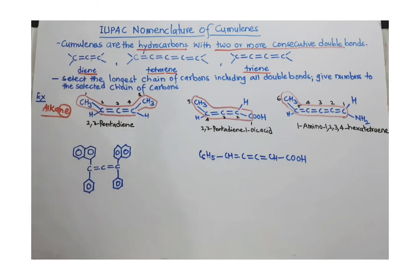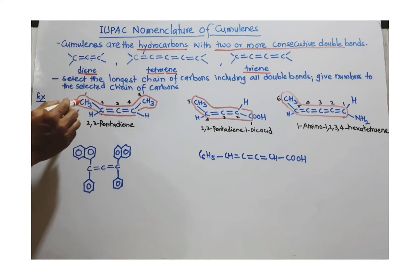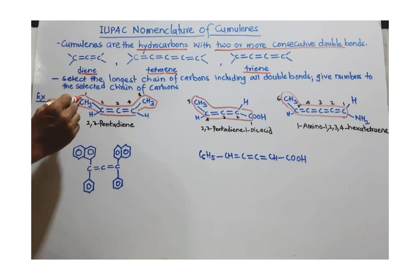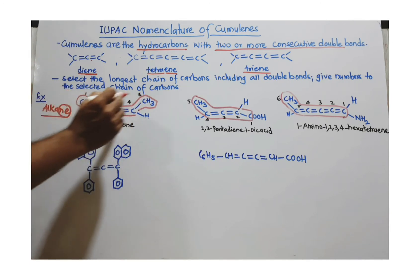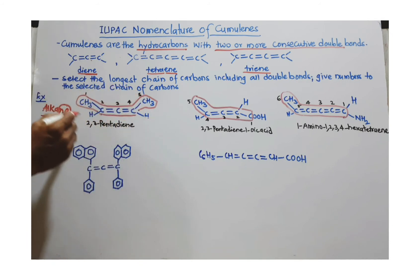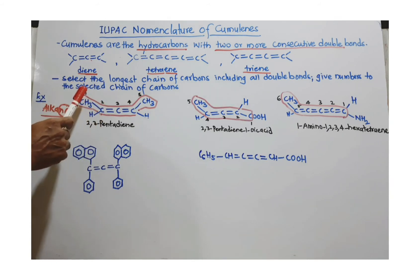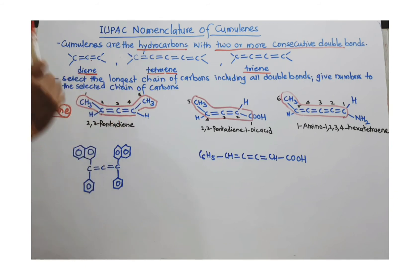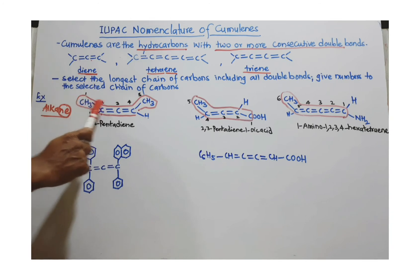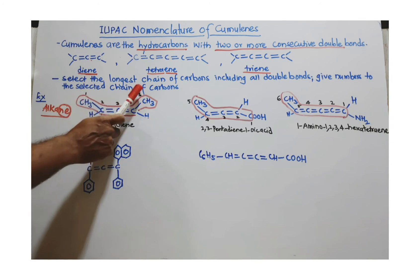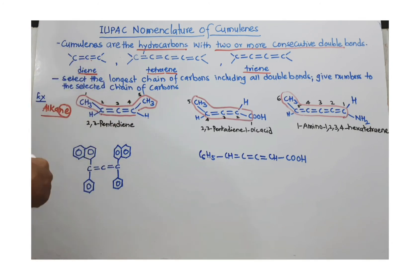Let's take a few examples. In this example, you have to select the longest chain — that is the very first task. You cannot skip any carbon. I have selected all carbons in this longest chain and then given the numbers. The numbering can start from either end. The only requirement is that the double-bonded carbon should get the least possible number. So I have numbered 1, 2, 3, 4, and 5 — there are 5 carbons.